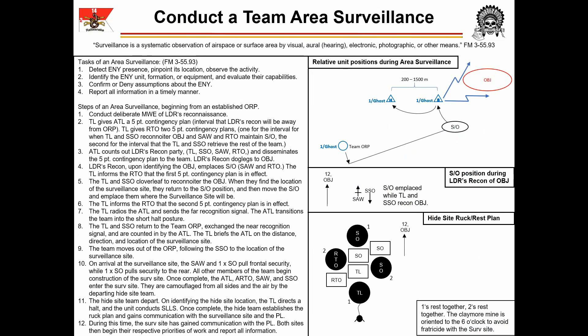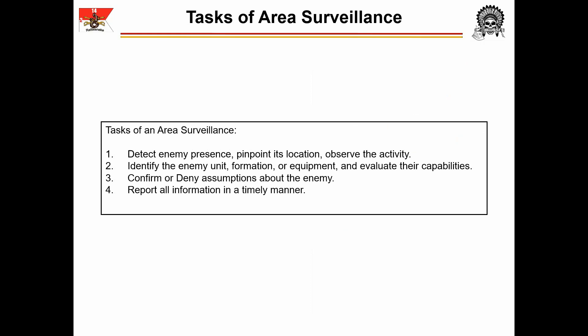Our teams can also complete an Area Surveillance. This is a traditional C-Troop operation in which the team splits into a Hide Site Team and a Surveillance Site Team and maintains observation of an objective for a long duration. There are multiple tasks of an Area Surveillance per FM 3-55.93, synthesized into four tasks: First, detect enemy presence, pinpoint its location, and observe the activity. Second, identify the enemy unit, formation, or equipment, and evaluate their capabilities. Third, confirm or deny assumptions about the enemy. And fourth, report all information in a timely manner.